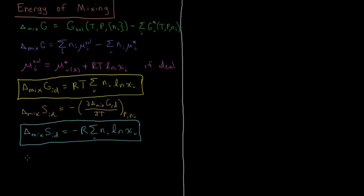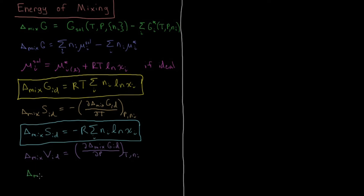Another quantity of interest is the volume change upon mixing. The volume is the partial derivative of the Gibbs energy with respect to pressure. Differentiating the Gibbs energy of mixing for an ideal solution with respect to pressure — holding temperature and mole numbers constant — we see there is no pressure dependence anywhere in the expression. So the derivative is zero, meaning the volume change of mixing for an ideal solution is zero.